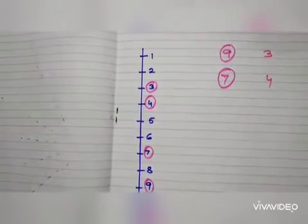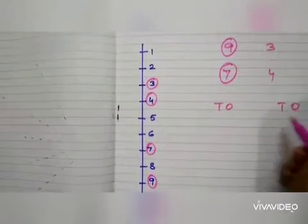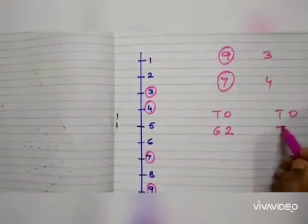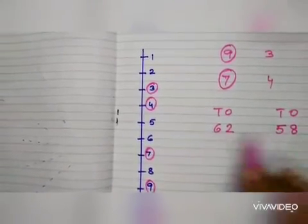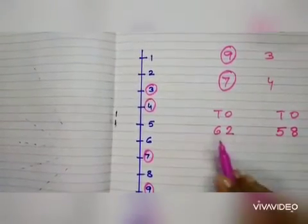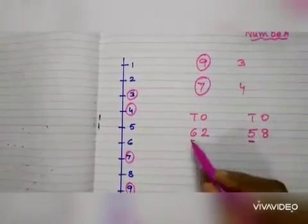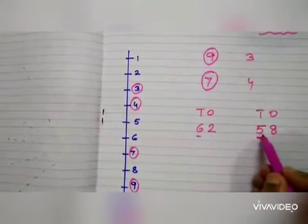Have you understood? Now I will take 2 digit number. See here. 62, 58. Children, in 2 digit number, first of all you see the left digit, left number. The number digit. 6. Here it is 5.